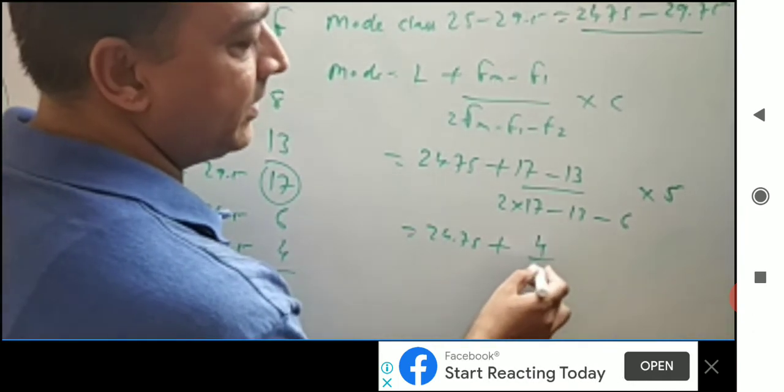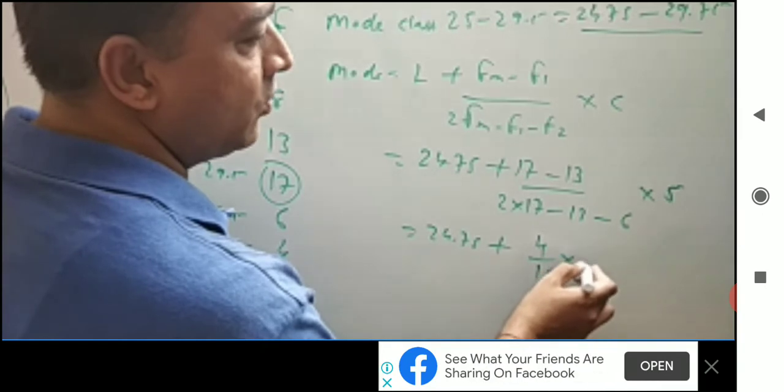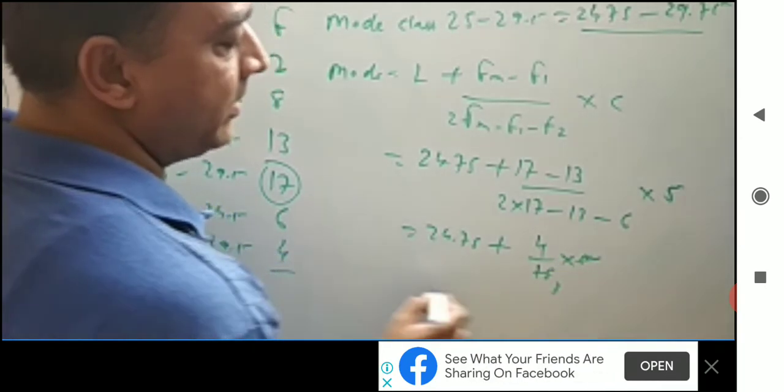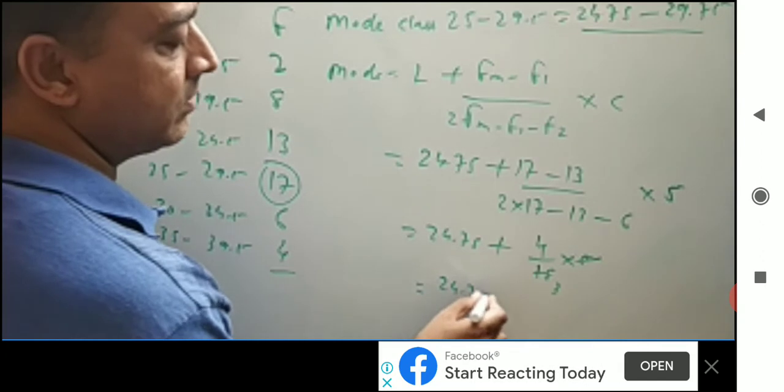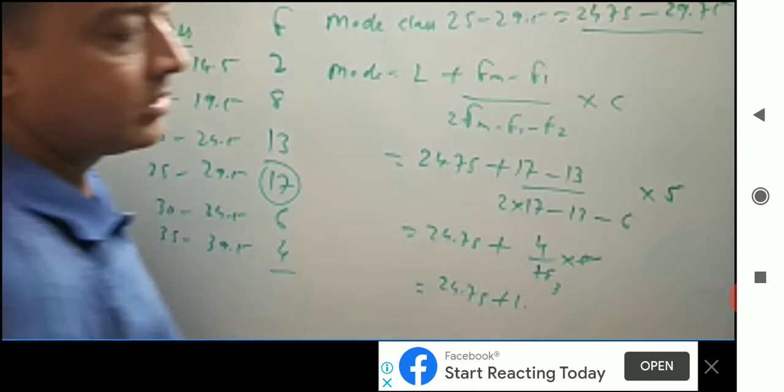So 5 into 4 divided by 15, what is the value? 1.33.